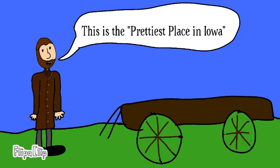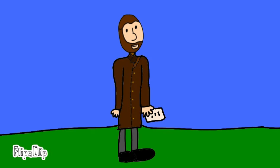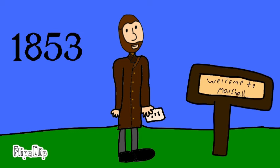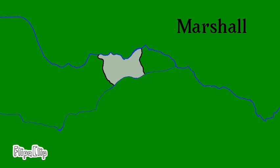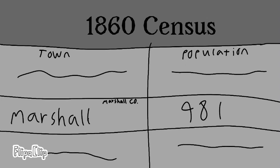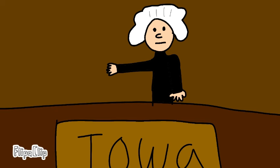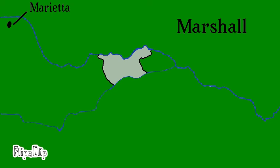In April 1851, Henry Anson arrived in what he stated was the prettiest place in Iowa after settling in the area between the Iowa River and Lynn Creek. It wasn't until two years later in 1853 that Henry Anson decided to name the town Marshall, the same name of a previous town in Michigan that he had lived in at one time. Under the leadership of Anson, the town grew fast, reaching a population of 981 according to the 1860 census, and even obtaining the role as county seat of Marshall County, Iowa after the Iowa Supreme Court decided in favor of Marshall in December of 1859 instead of Marietta, which was the original county seat.